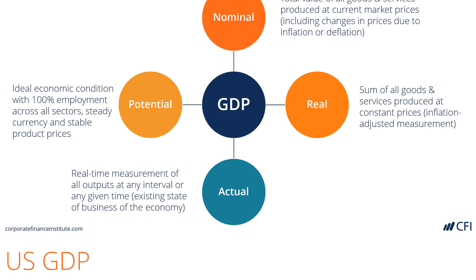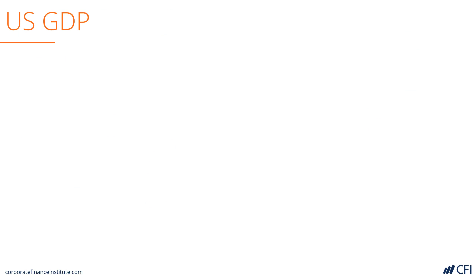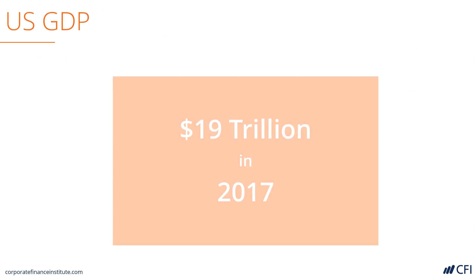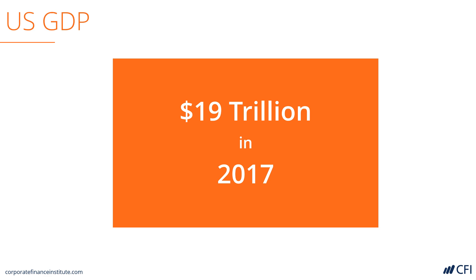Now you might be wondering, what is the value of U.S. GDP, for example? Well, in 2017, the value of all goods and services produced in the United States was $19 trillion.